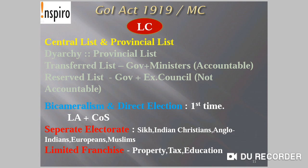Government of India Act 1919, also known as the Montagu-Chelmsford Act. For legislature-related provisions, the list of subjects was divided into two: the Central List and the Provincial List. The Central List covered subjects on which the centre could legislate, and the Provincial List covered subjects on which the provinces could legislate. Under the provincial list, a Diarchy system was included — Diarchy meaning double rule — with the provincial list further classified into the Transferred List and the Reserved List.